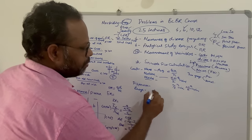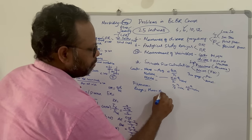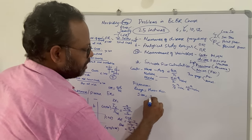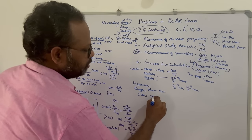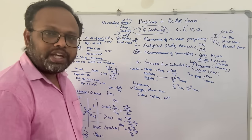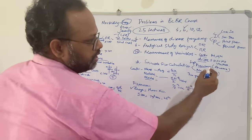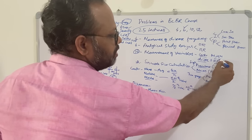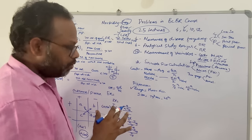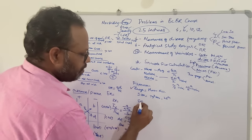Moving to measures of dispersion, we have range — given by the formula maximum value minus minimum value. We have interquartile range — the difference between the 75th percentile and the 25th percentile. For exam problems, only range calculations will be present. Then we need to understand variance, standard deviation, coefficient of variation, and mean deviation.